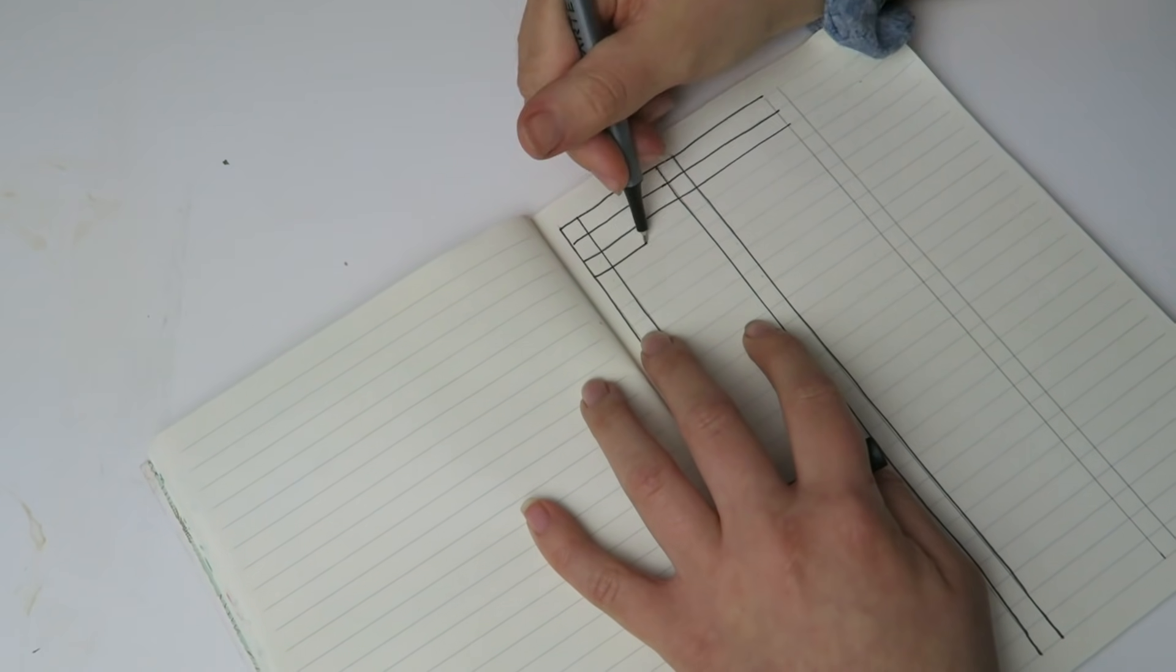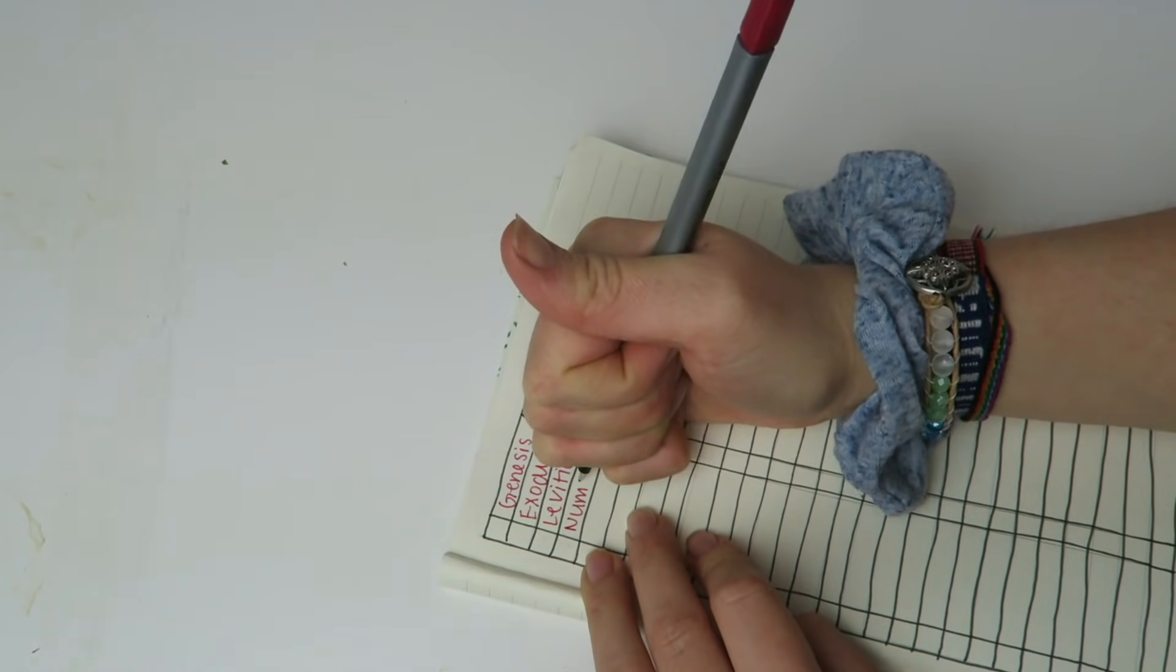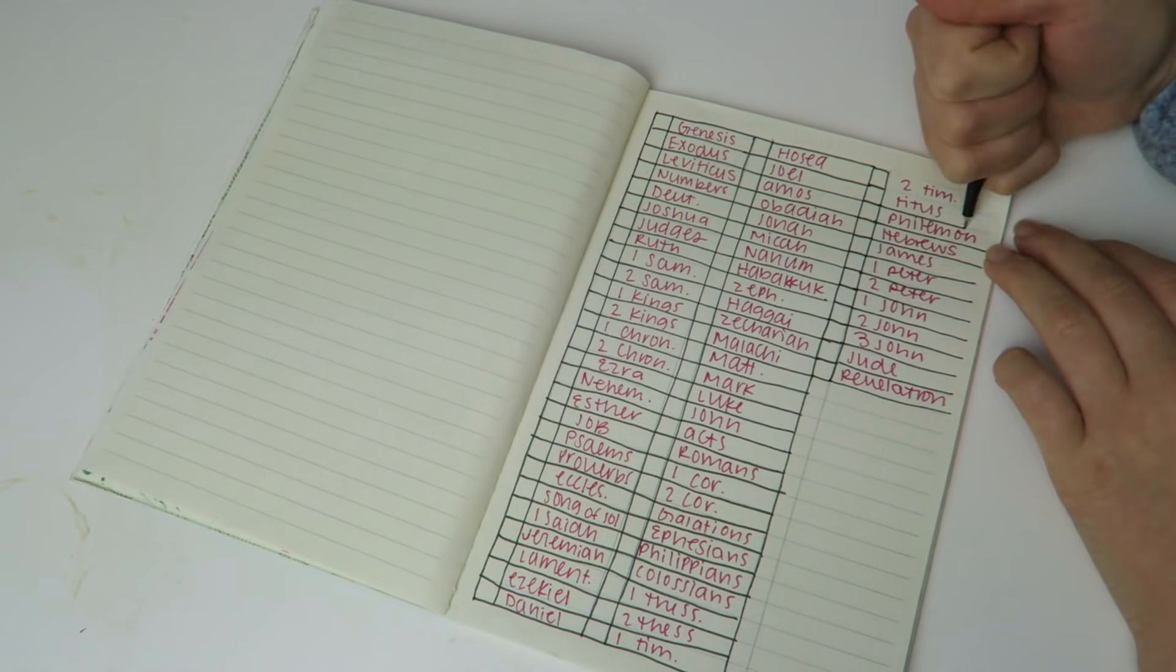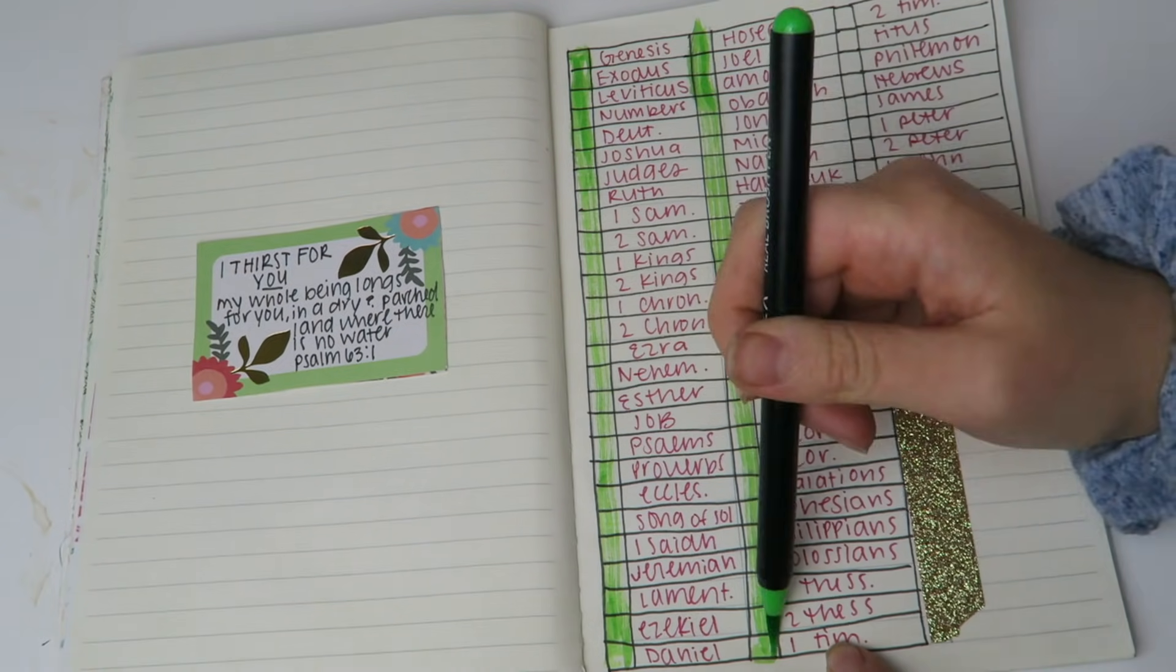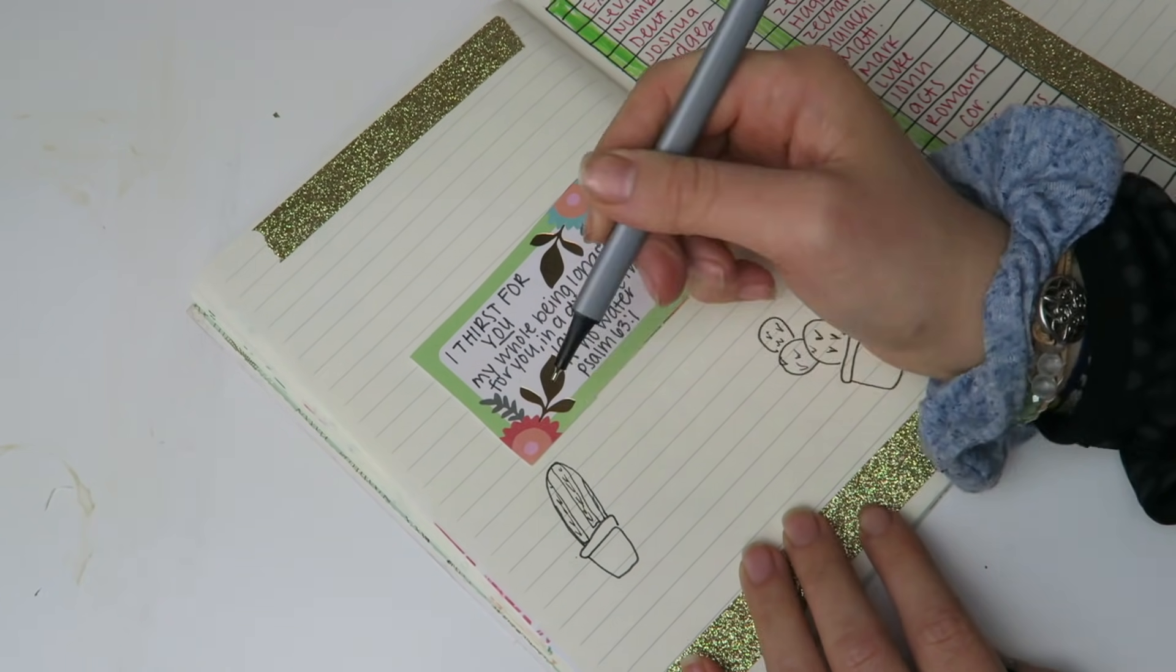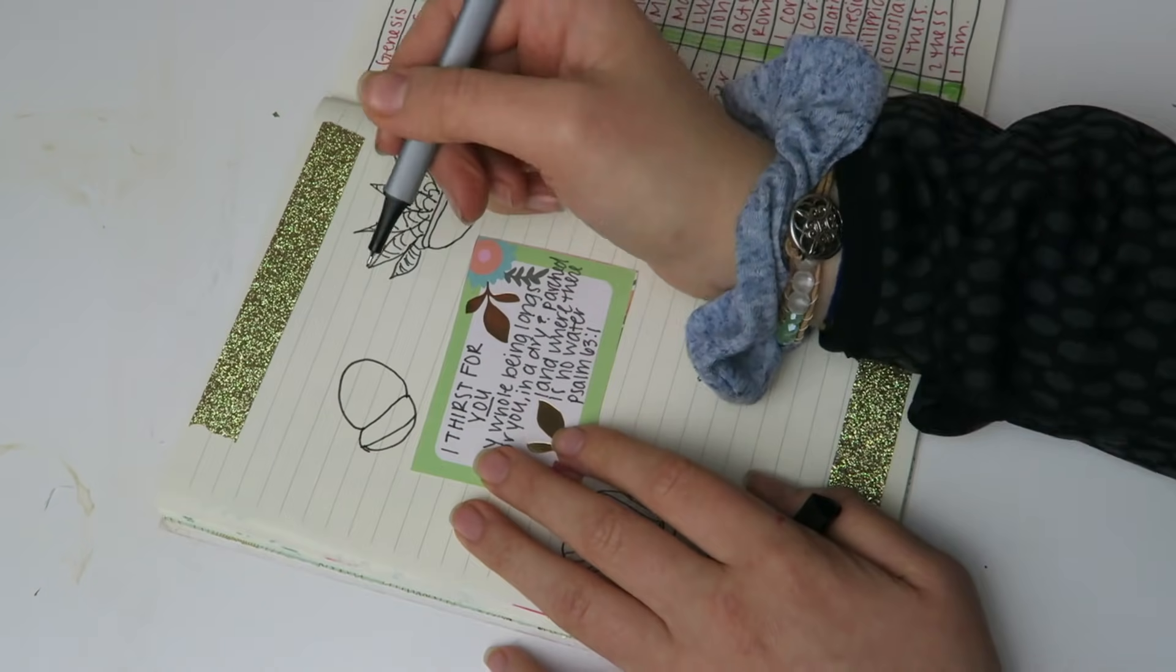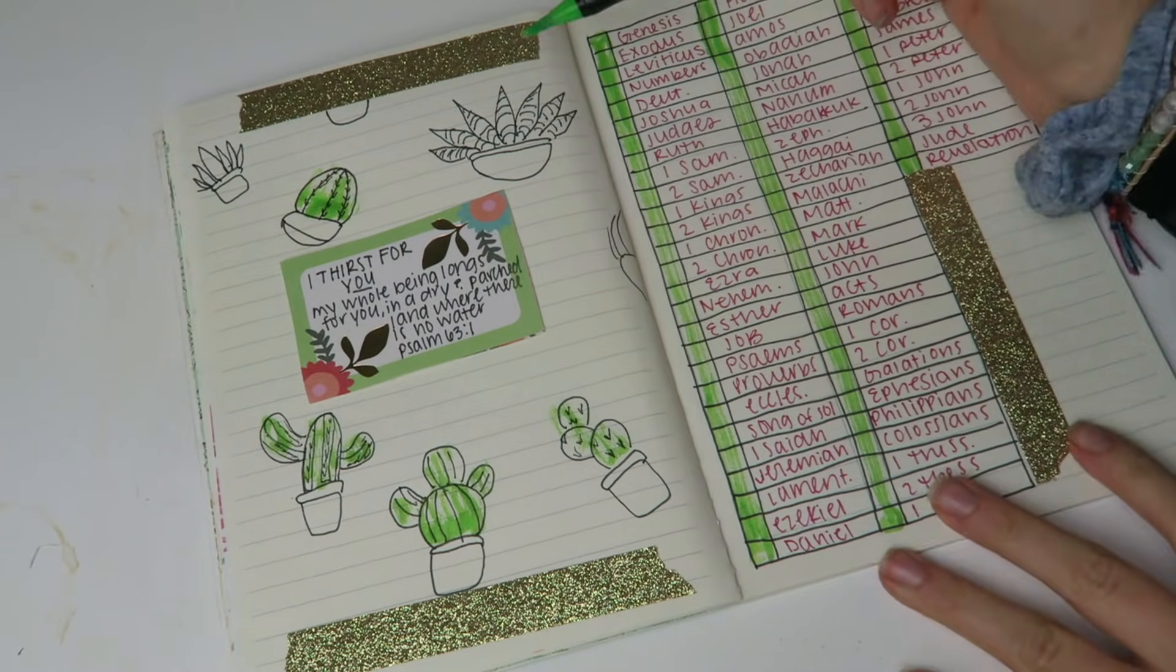The next section I have is the Bible reading plan. So right now I'm actually trying to read through my entire Bible. And so on this page, I just wrote out Genesis through Revelation because I'm reading through the entire Bible. And I just found it nice to have it organized in here so that I could cross off when I was done reading the verse or the book. And then I put on this side, the Bible verse, Psalm 63, I thirst for you, that Bible verse and then some cute little cactuses.